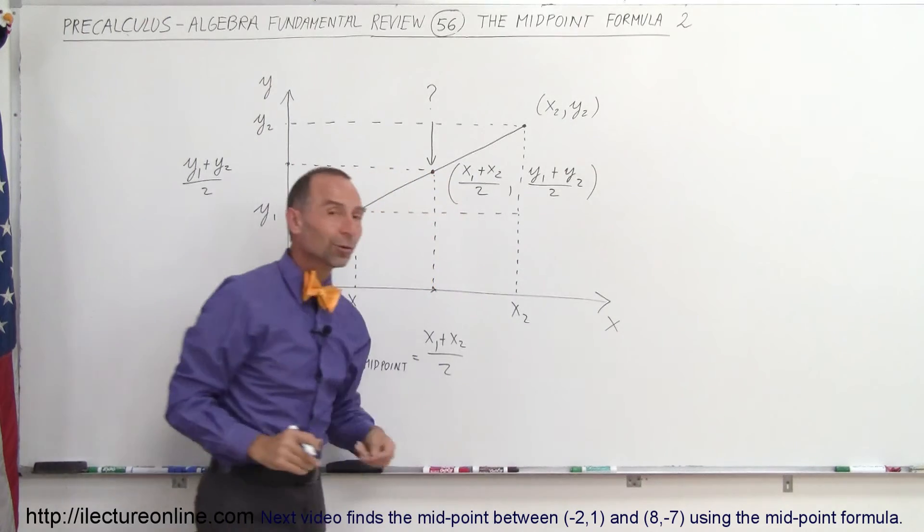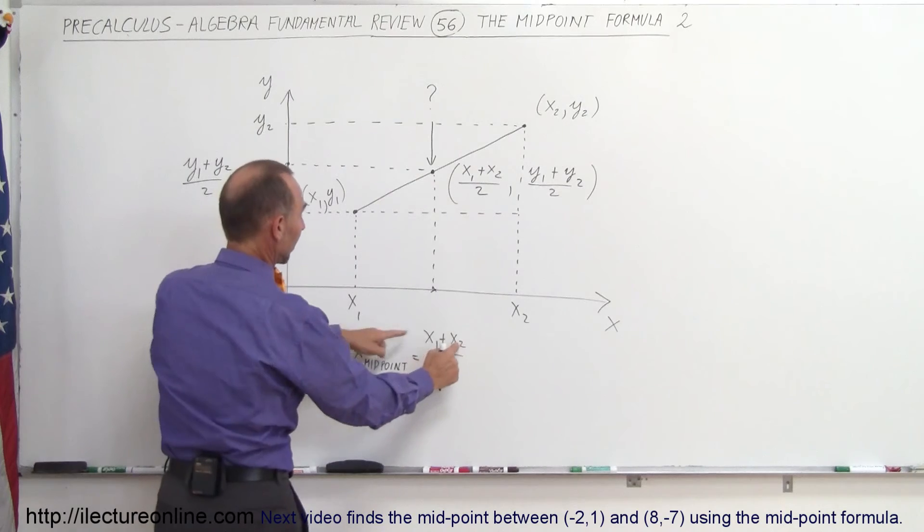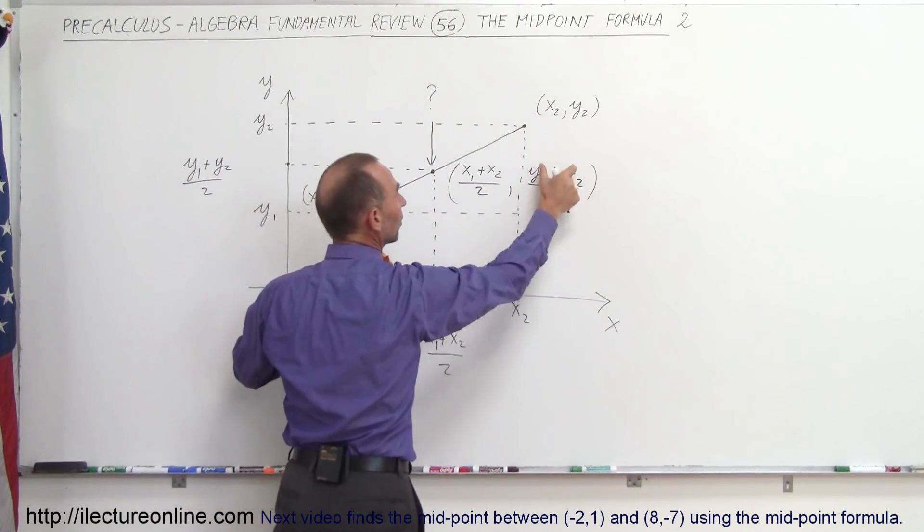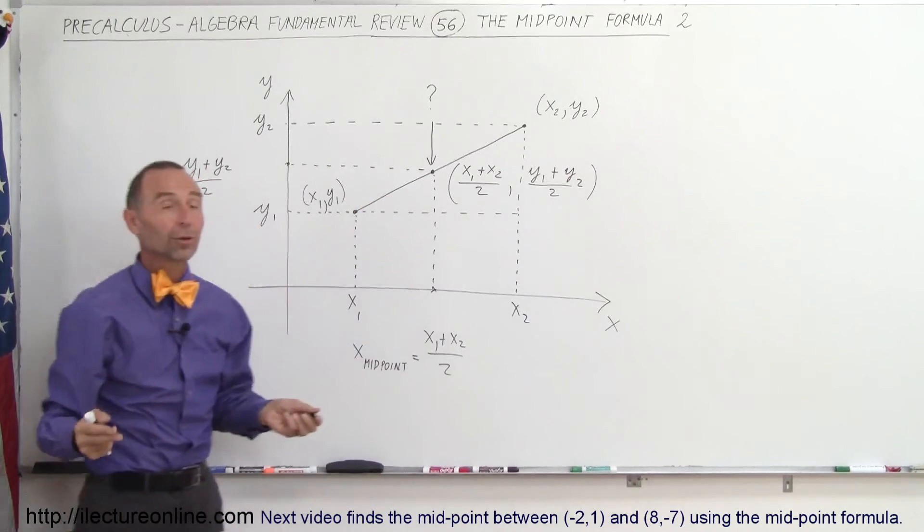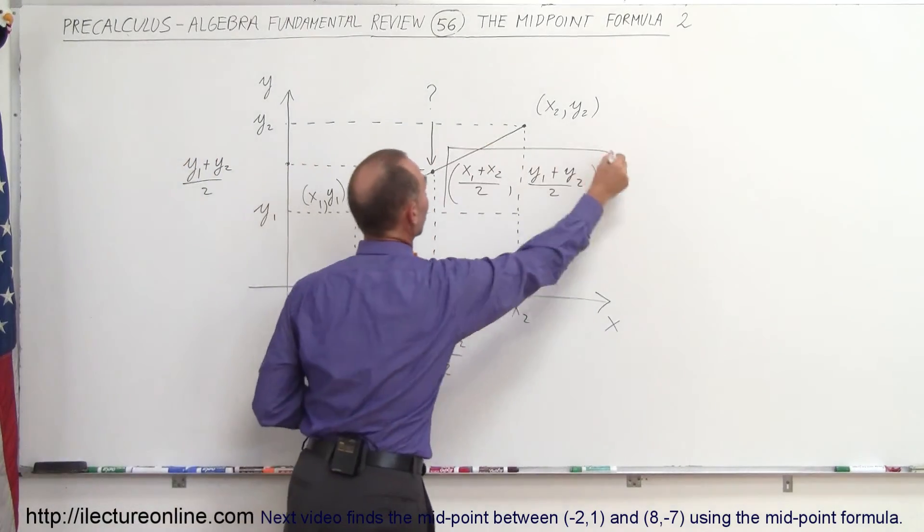And that's all we have to do. So the midpoint formula is actually very simplistic. All you do is add the X values together, divided by 2 to get the X coordinate, add the two Y values of the two points together, divided by 2 to get the Y coordinate, and that's what we would call the midpoint formula.